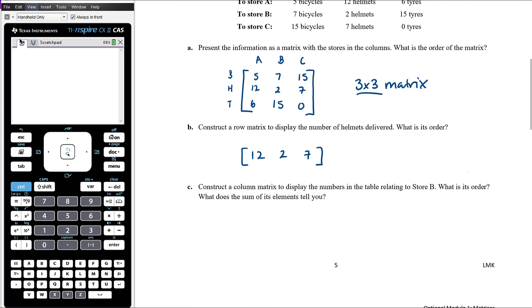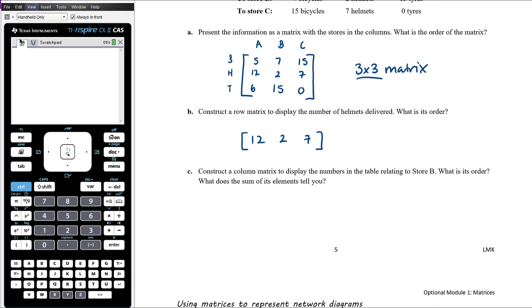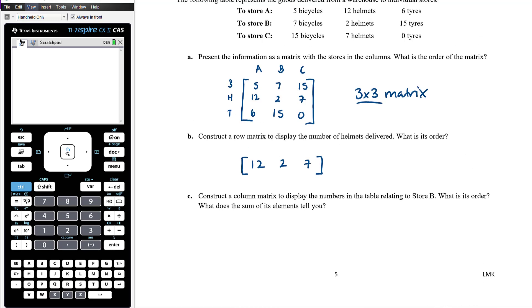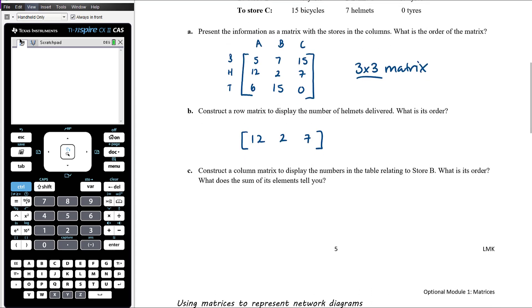Part C, construct a column matrix to display the numbers in the table relating to store B. So again, store B, essentially going to have that column matrix. And so it will be seven, two and fifteen. Then it says, what is the order? So this is, oh sorry, and part B we asked what the order was as well. So the order is, in this case, one by three. The order, in this case, is three by one.